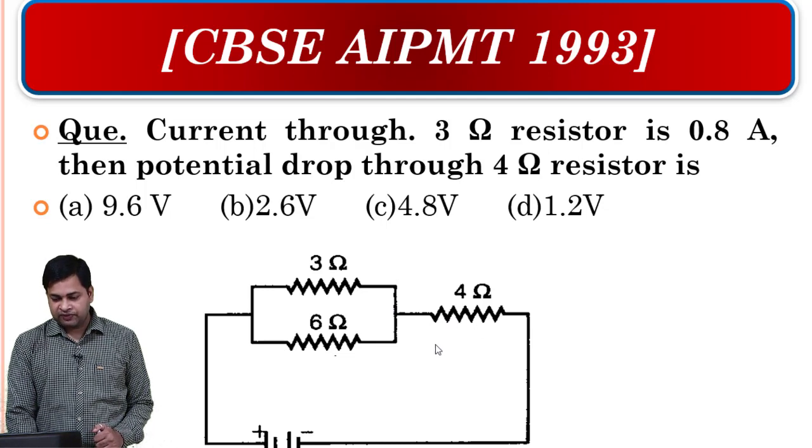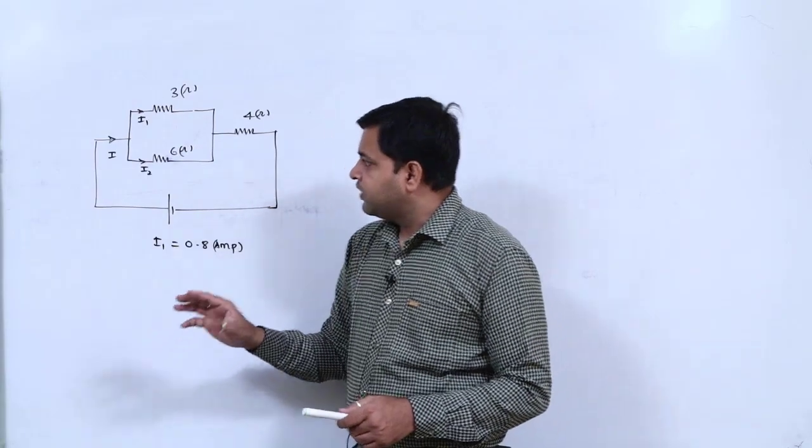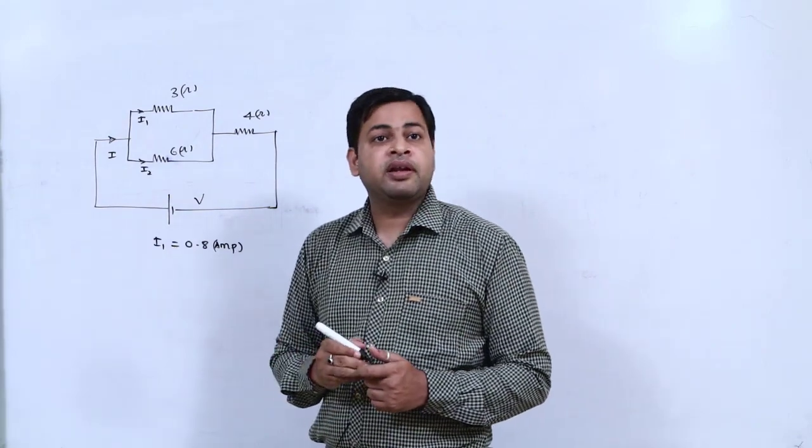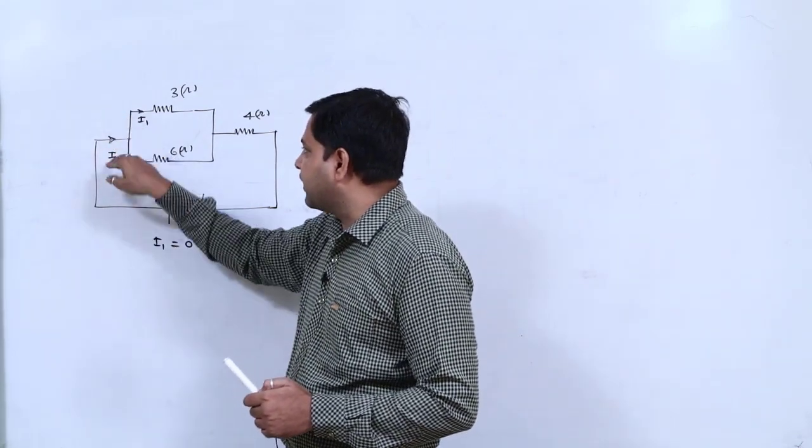And after coming, however much passes through here, we will find the potential difference. So let's look at the board. What is said here? It says that a cell or battery is connected here, and this connection is established. Current i is entering here.